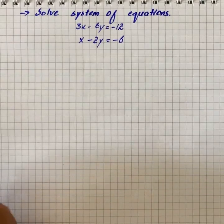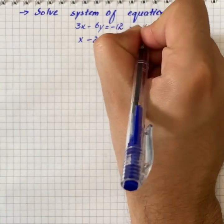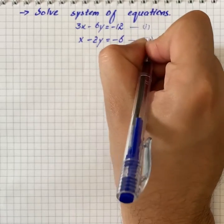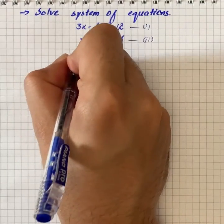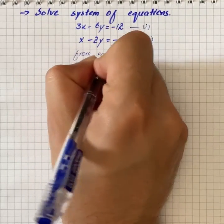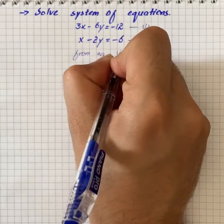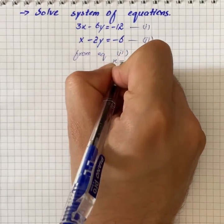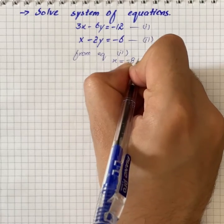Here we have a system of equations to solve. We will name this equation as equation number one and this equation is equation number two. From equation number two, we can write that x is equal to minus 8 plus 2y.